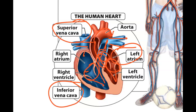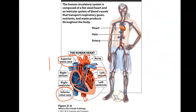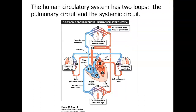The aorta wraps around and dives deep, feeding the thoracic cavity and abdominal pelvic organs, then splits to feed the lower limbs. Three vessels at the top feed the neck and upper limbs. The pulmonary system goes to the lungs, while the systemic system carries blood to all systems of the body.